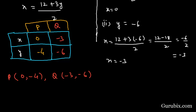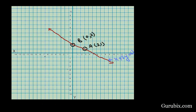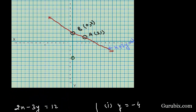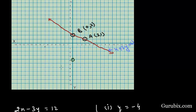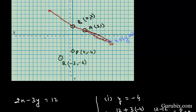We place point P at (0, -4) on the graph paper, and point Q at (-3, -6). We draw a straight line through P and Q — this is the line 2x - 3y = 12. We observe that the two lines intersect at (6, 0), so the value of x = 6 and y = 0.